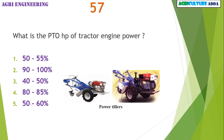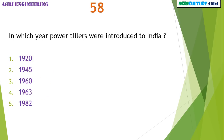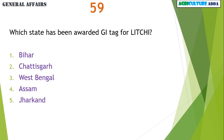What is the PTO HP of tractor engine power? 80 to 85 percent. In which year were power tillers introduced to India? 1963. Which state has been awarded the geographical indication tag for Litchi? Bihar.